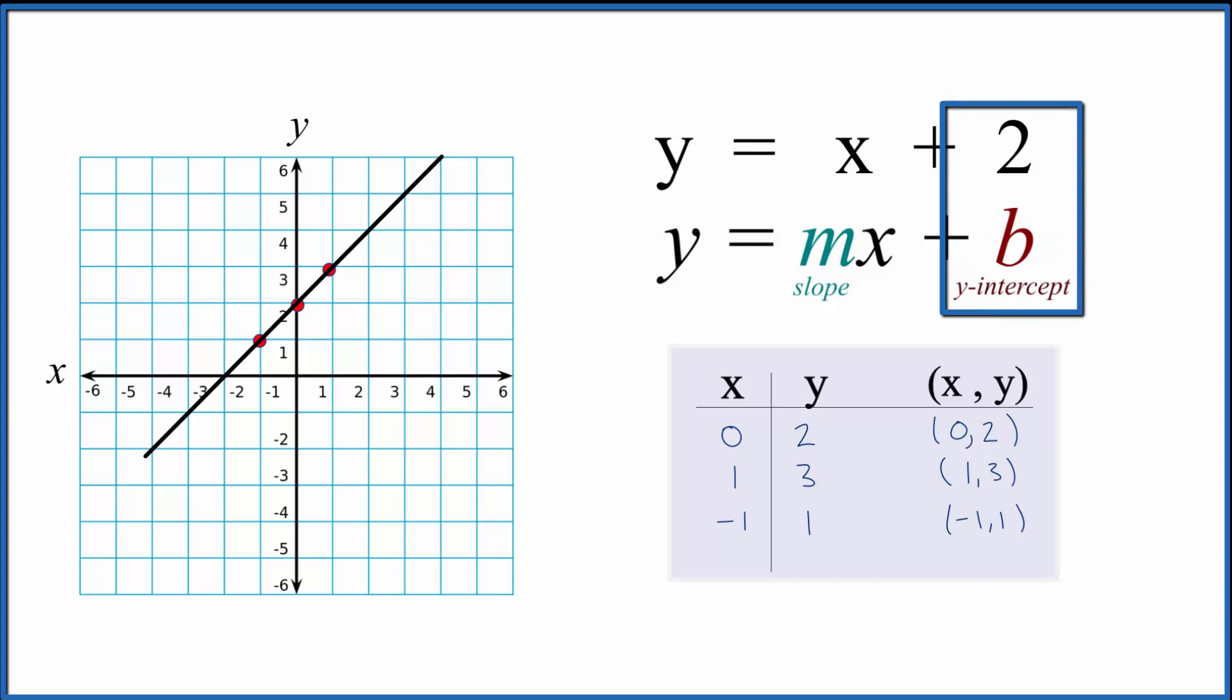So we can just put a point on x is 0, y is 2. We already have a point right over there. So that's our y-intercept. And then we have m, that's the slope. You know that there's a 1 in front of the x. We don't write that but it's there.